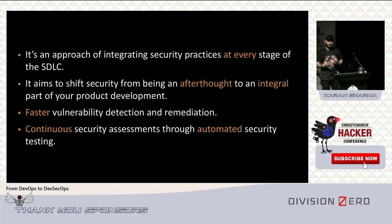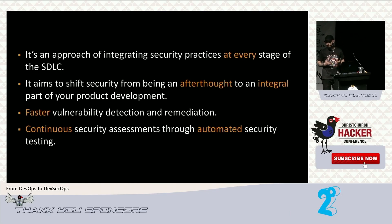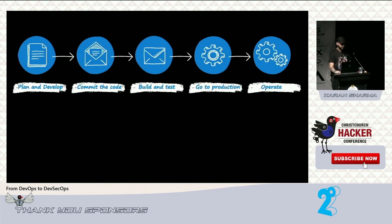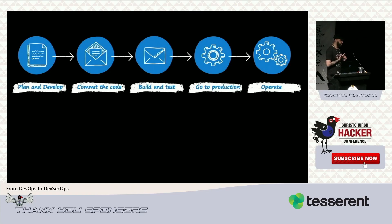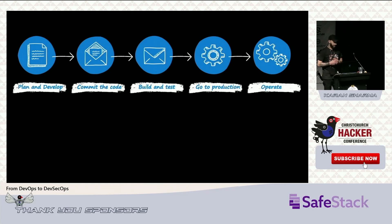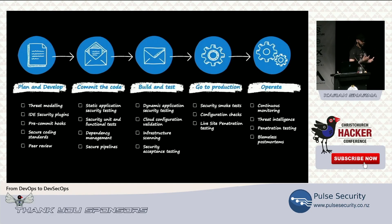DevSecOps provides continuous security assessments, meaning every release has some security assurance in an automated fashion. As an example, in a typical SDLC: developers write code, commit it, it becomes an artifact, we test that artifact for quality and integration, push it to production, and then enter the maintenance phase. DevSecOps integrates security activities at every one of these phases.